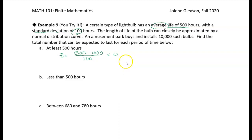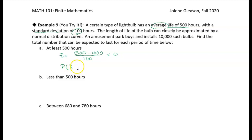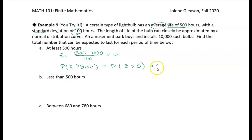The standard normal distribution curve has a mean of zero, and half the area lies to the left and half to the right. So the probability that X is greater than 500 equals the probability that z is greater than zero, which is just 0.5. We would expect half of the light bulbs to last at least 500 hours — that's 5,000 bulbs.